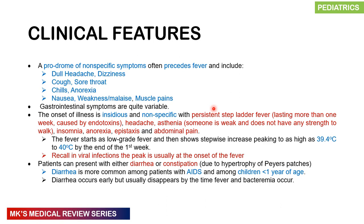The stepladder fever lasts more than one week and is attributed to endotoxins. Patients may have headache, asthenia, insomnia, anorexia, epistaxis, and abdominal pains. The fever initially starts as low grade, then has a stepwise increase and can peak as high as 39.4 to 40 degrees Celsius by the end of the first week — the opposite of viral infections, where the peak is usually at onset. Patients can present with either diarrhea or constipation. Constipation is often due to hypertrophy of the Peyer's patches, and diarrhea is much more common in patients with AIDS and in children under one year of age.